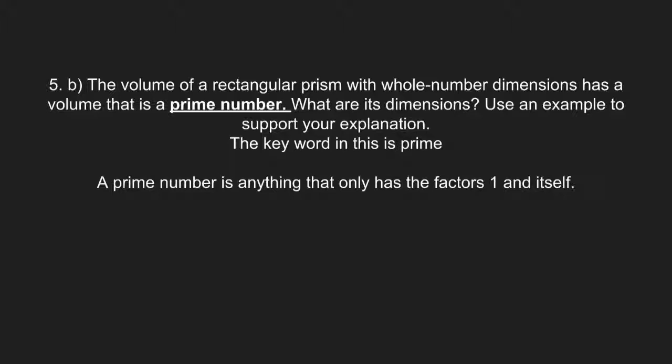A prime number is anything that only has the factors one and itself. With that in mind, for this question there is more than one answer. If we're talking about the number 144, then the dimensions have to be one by one by 144.